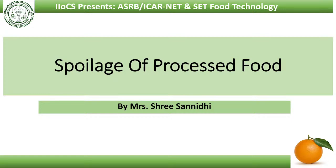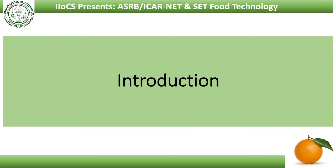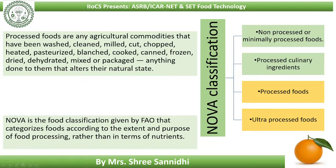Welcome to iiocs.com food tech club. Today's topic is spoilage of processed food. Let us first see what processed food is. Processed foods are any agricultural commodities that have undergone any kind of processing like washing, cleaning, milling, cutting, chopping, heating, pasteurizing, blanching, cooking, canning, freezing, drying, dehydrating, mixing, or packaging. Any foods which undergo such processing methods are called processed foods.